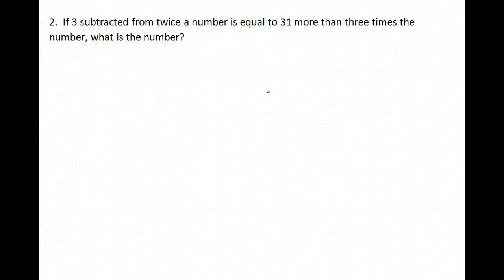Okay, here's the next problem. If three subtracted from twice a number is equal to thirty-one more than three times the number, what is the number? We are trying to find... Step one is always find. We're trying to find one number.